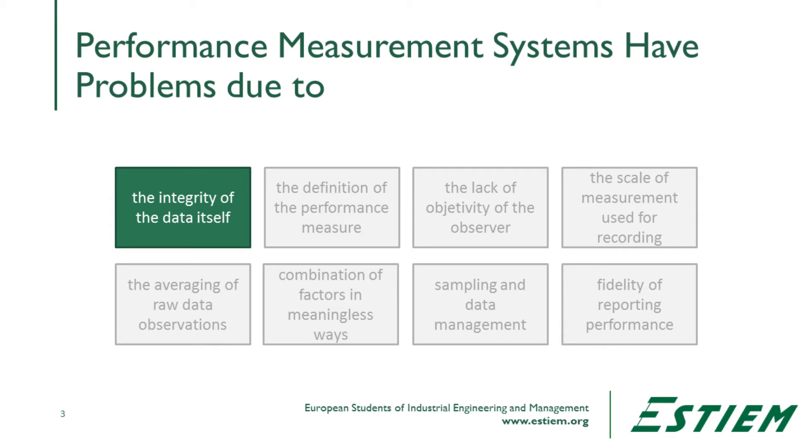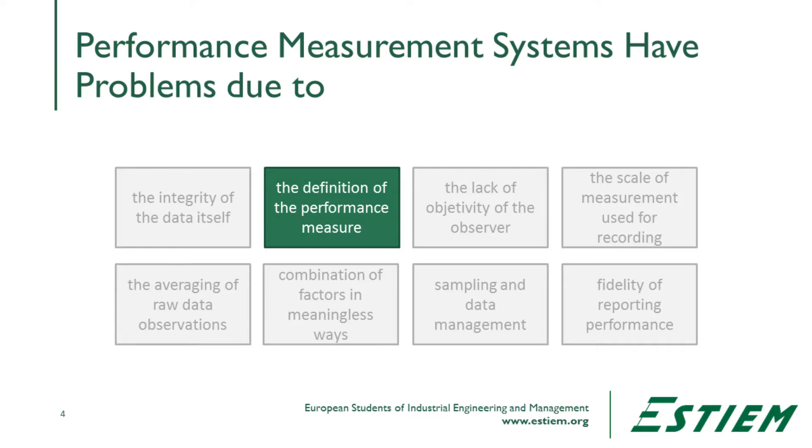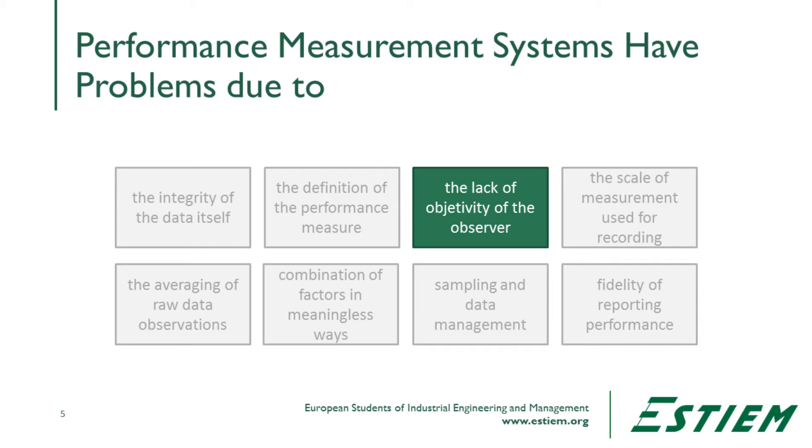Performance measurement systems have a variety of problems. There are problems due to the integrity of the data itself — many times we don't actually keep the data very well, and we have missing data, unobserved data, or data that hasn't been completed by people. Sometimes it's due to the definition of the performance measure — for example, with on-time delivery, we don't clearly identify what we mean by the start and the finish. Sometimes it's based on the objectivity of the observer. If asked to report on my own performance, I might not be willing to call my failures an actual failure — maybe I want to call it something else or blame someone else.